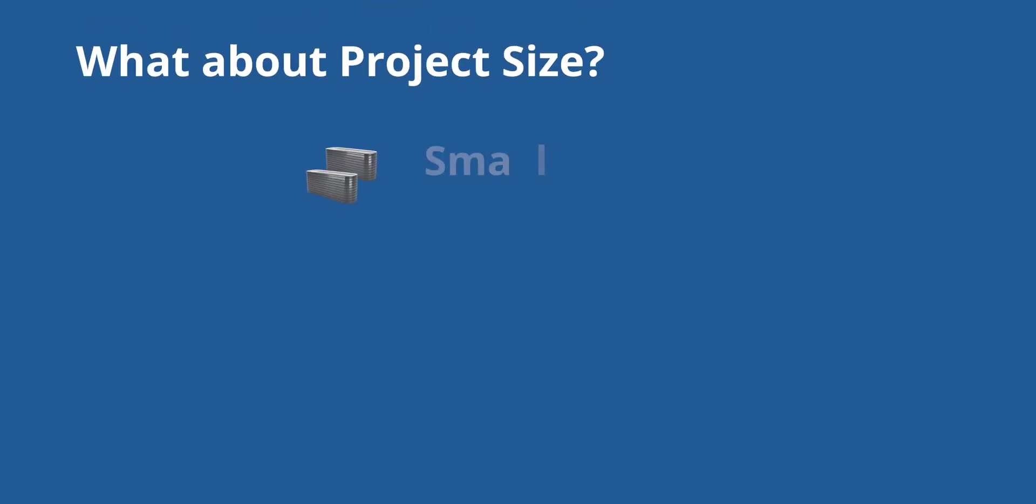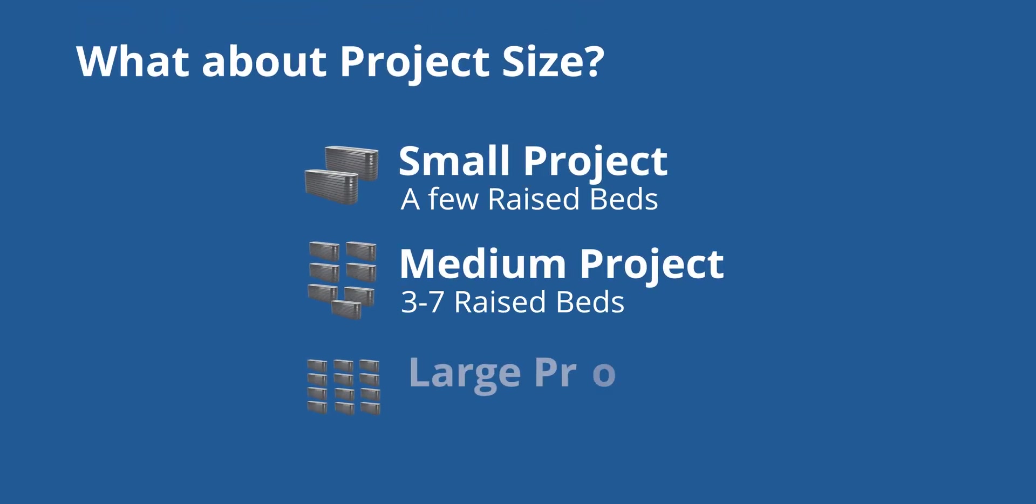So, what do we mean by project size? In general, we refer to small, medium, and large projects. Now, to some degree, this is subjective. If you've never installed a drip irrigation system before, even a small project can feel kind of large. But in general, a small project might be a few hanging baskets or containers, or a couple raised beds. A medium or moderate project can be anywhere from three to seven beds. After that, it's going to feel like a large project, unless this is something you do professionally.